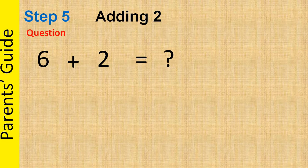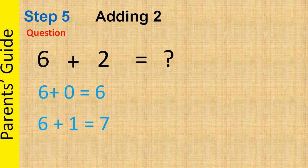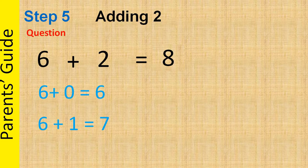When we teach 6 plus 2, again we have to start with 6 plus 0 is equal to 6, 6 plus 1 is equal to 7, and your child might be able to say 6 plus 2 is equal to 8. We have to make sure that we do not change the sequence. When we add 2 to a number, the number should come first and 2 should come after that. Initially, we should not change the sequence as it might confuse the child.